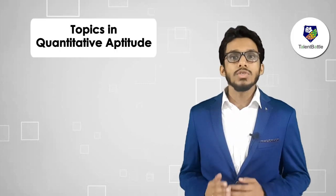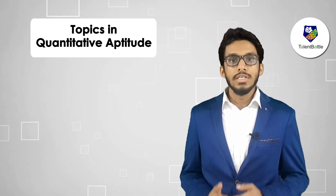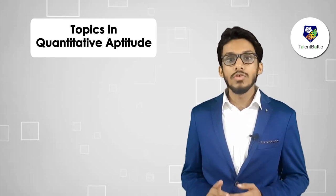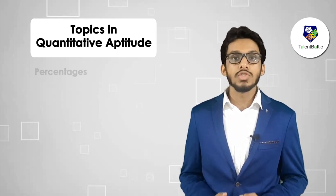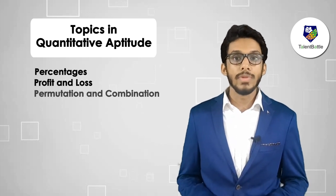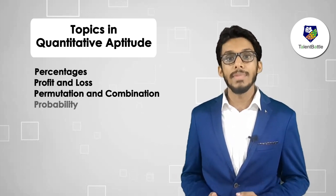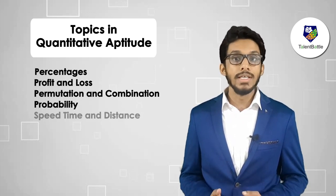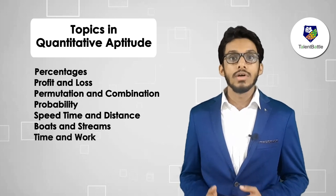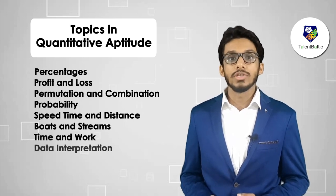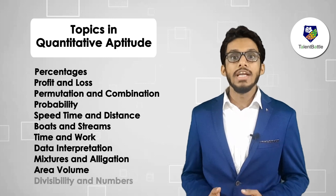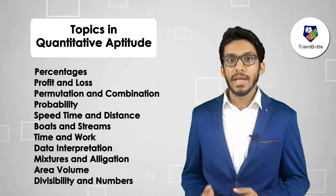The Infosys quantitative aptitude syllabus consists of: percentages, profit and loss, permutation and combination, probability, speed distance and time, boats and streams, time and work, data interpretation, allegation and mixture, area and volume, and divisibility and numbers.